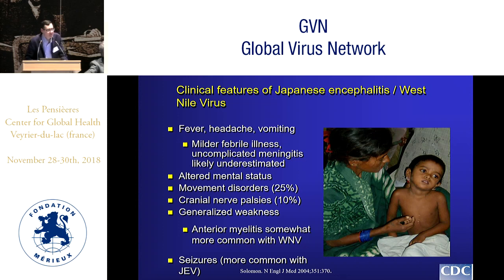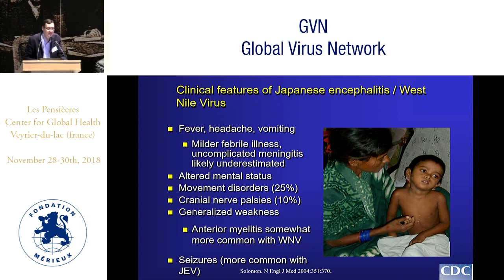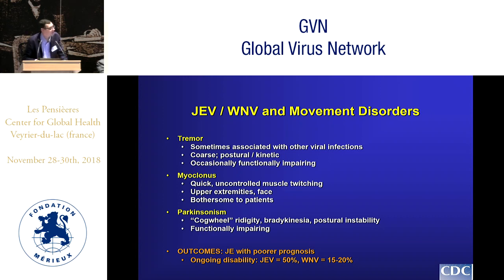Looking more specifically at the signs and symptoms of JE and West Nile: mild illness is characterized by fever, headache, and vomiting, and mild febrile illness or uncomplicated meningitis is likely underestimated in JE endemic areas and underreported in West Nile endemic areas. More severe disease is characterized by altered mental status, movement disorders in about a quarter of patients, focal neurologic deficits such as cranial nerve palsies. Anterior myelitis resulting in focal limb weakness is actually much more common with West Nile virus than with Japanese encephalitis, while seizures tend to be much more common with Japanese encephalitis virus.